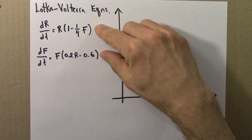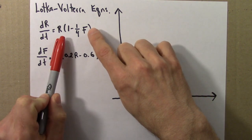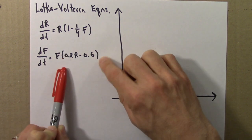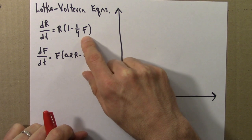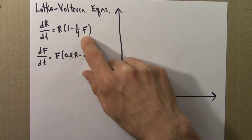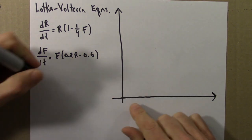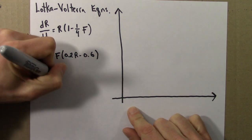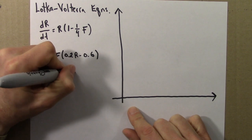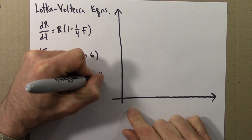The other solution, the other equilibrium is a little more interesting. And that would be obtained if we set the term in parentheses, each of these terms in parentheses equal to 0. So we did that. We can see that f equals 4 solves this. And r equals 3 solves that. So let me just write that we have fixed point. And that's at r equals 3, f equals 4.